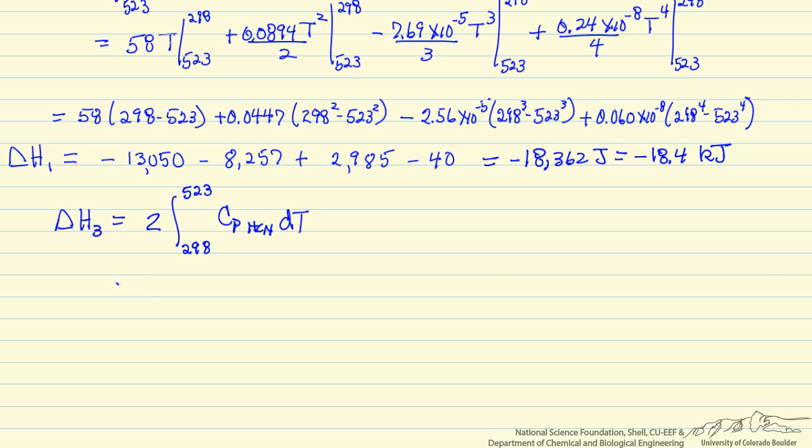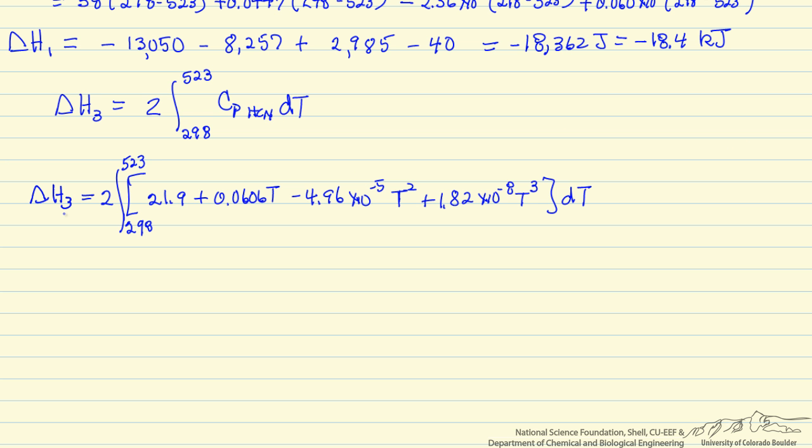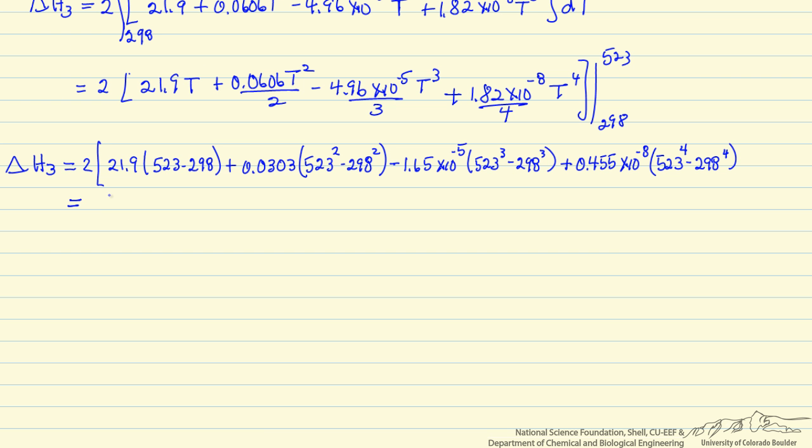So we are going to substitute in the value for the heat capacity. So here is the heat capacity for HCN. We are going to now do the same kind of integration as we did before and substitute in the limits. The value of delta H3 is 17,580 joules or 17.6 if I round off kilojoules.